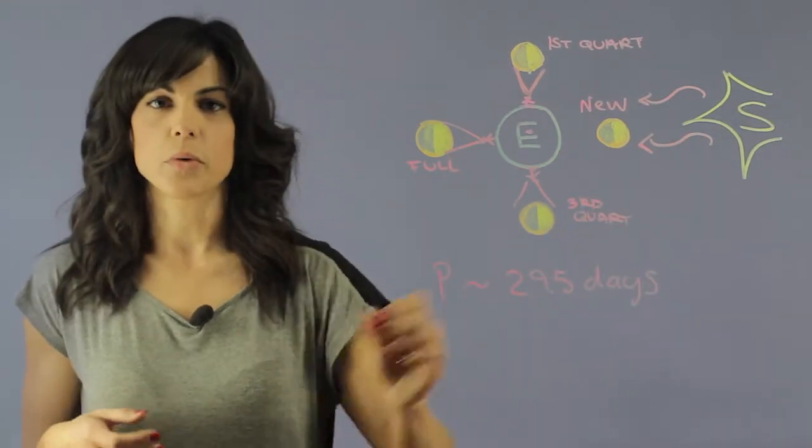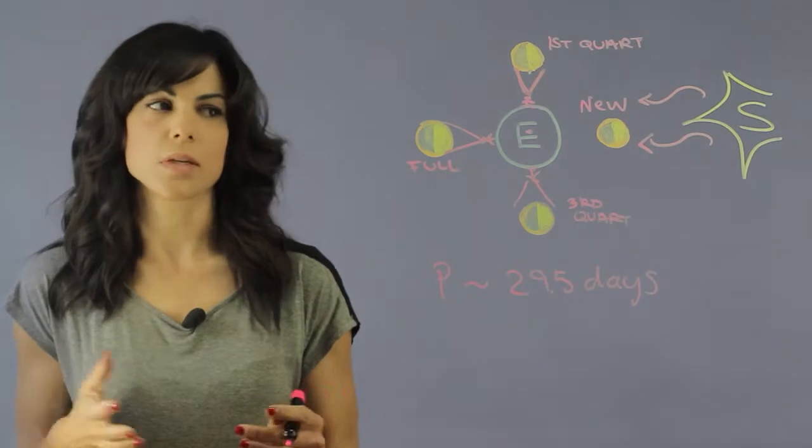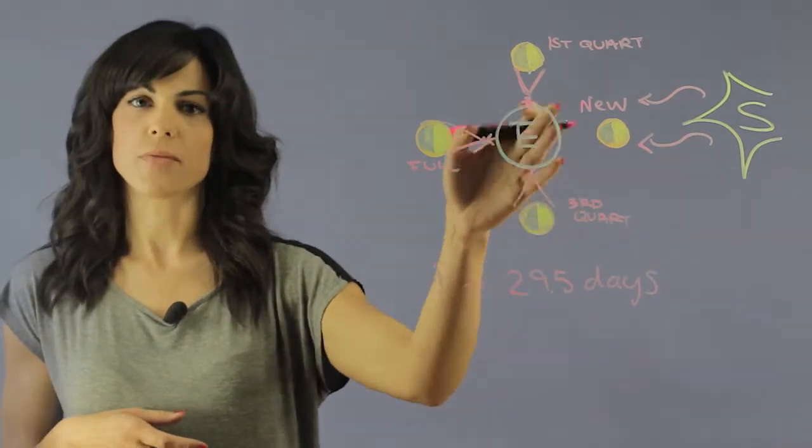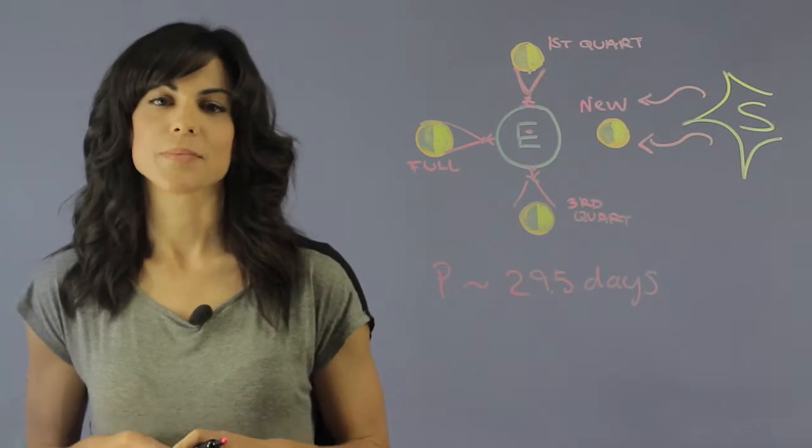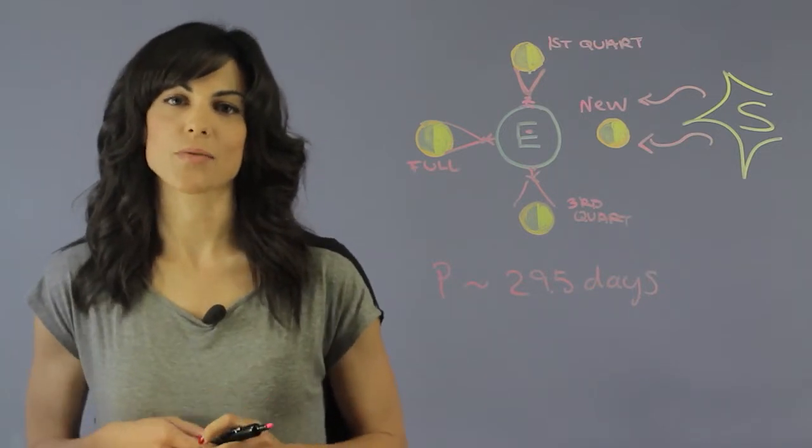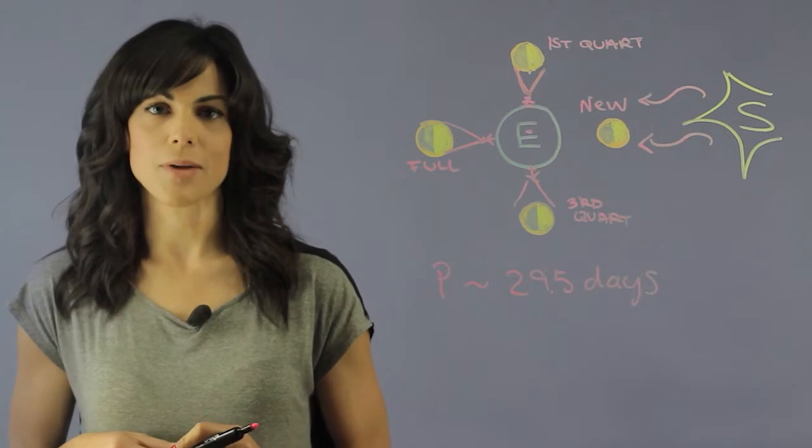And this is the phases of the moon and synodic month just means that it takes 29.5 days to go from the beginning of new moon back to new moon. My name is Aileen Perez and I'm an astrophysicist and these are the phases of the moon during the synodic month.